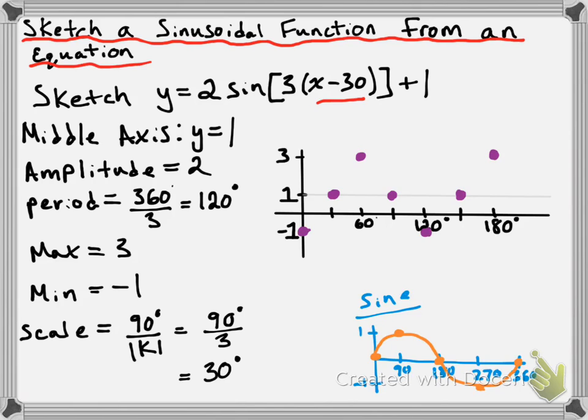Now that we have all our points, we connect them with a curve. So this is a sketch of y equals 2 times the sine of 3 times x minus 30 degrees plus 1. I hope this is useful when you're doing sketches on your own time. Come back to it whenever you need. Take care, guys.